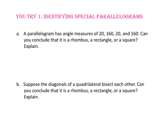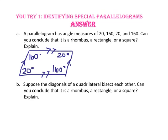Pause the video and do you-try number 1. In Part A, a parallelogram has angle measures of 20, 160, 20, and 160. Can you conclude that it is a rhombus, a rectangle, or a square? Let's start by drawing the parallelogram. Since we do not know if all four sides are congruent, we do not know that this is a rhombus. Since all four angles are not 90 degrees, it cannot be a rectangle or square. So perhaps it is a rhombus, but we are not sure because we do not know about the side lengths.